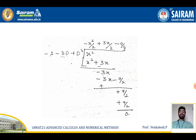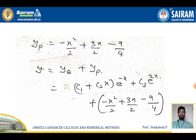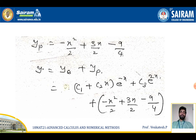Combining the complementary function and particular integral, the complete solution is y = (c1 + c2x)e^(-x) + c3·e^(2x) + (-x²/2 + 3x/2 - 9/4). In the next lecture I am going to discuss another type of non-homogeneous differential equation. Thank you.